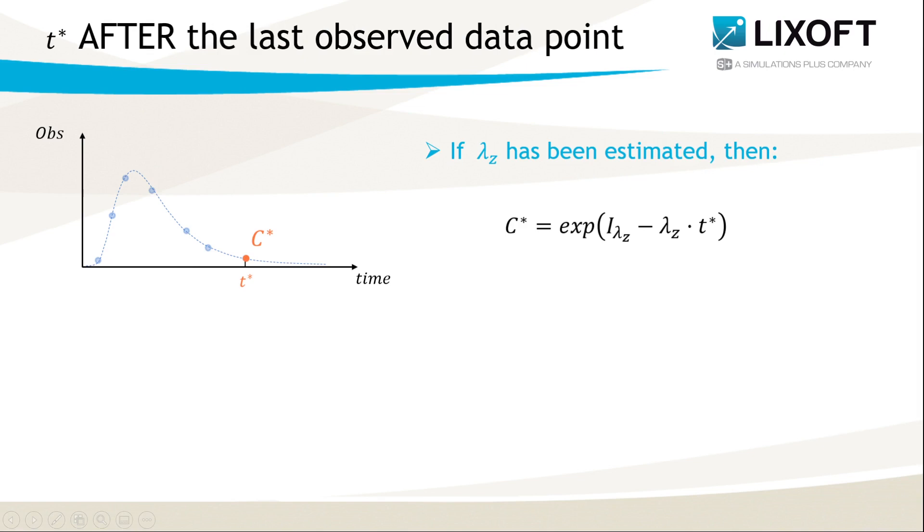When the partial AUC concerns times after the last observed data point, then the additional concentration is computed by extrapolation based on the terminal slope of the log-transformed concentration, that is, lambda-z parameter and its intercept. In this case, it is necessary to have lambda-z estimated, otherwise the partial AUC will not be computed.